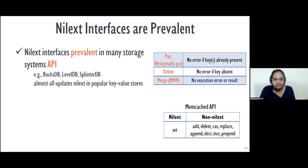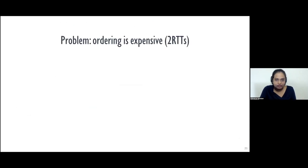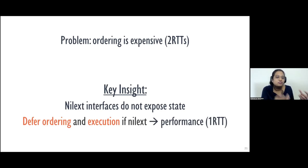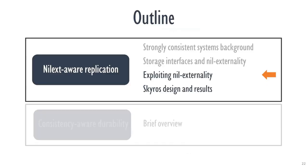Some APIs have a mix of nil-ex and non-nil-ex interfaces, like memcached. But production traces reveal that most updates issued by applications are nil-ex — we see this from production traces of memcached at Twitter and IBM's cloud object storage. The problem I initially described was that achieving strong consistency requires establishing ordering, which is expensive. My key insight is that in today's storage systems, many update interfaces do not expose state. Whenever an interface is nil-ex, we can be lazy about when we establish ordering and execution, achieving one round trip for nil-ex updates without affecting consistency.